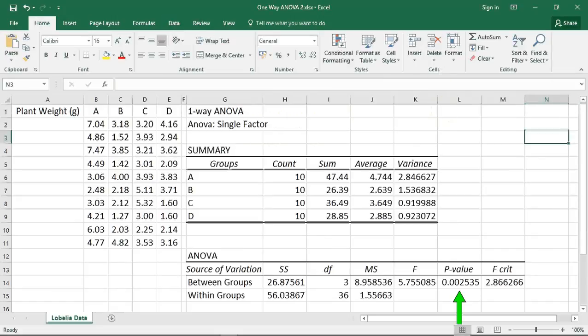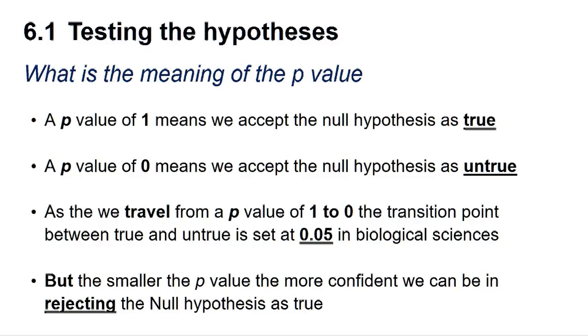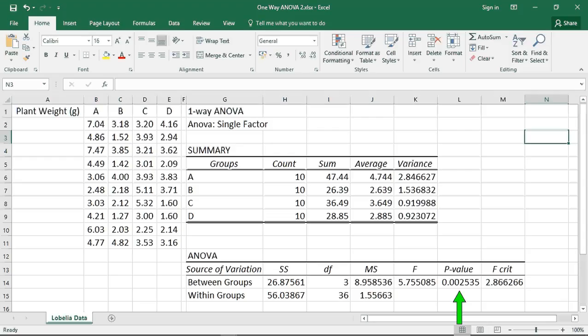As we can see, Excel has given us a p-value of 0.002535. A p-value of 1 means we can accept the null hypothesis as true, whereas a p-value of 0 means we can accept the null hypothesis as untrue. As we travel from a p-value of 1 to 0, the transition point between true and untrue is set at 0.05 in the biological sciences. The smaller the p-value below 0.05, the more confident we can be in rejecting the null hypothesis. Our probability of about 0.0025 is below our 0.05 transition probability, and we can say there is a significant difference between our composts and can reject the null hypothesis. In fact, the difference is below 0.01, so we could conclude that there is a highly significant difference between the mean fresh weight of the Lobelia variety HANA when weaned on four different composts.